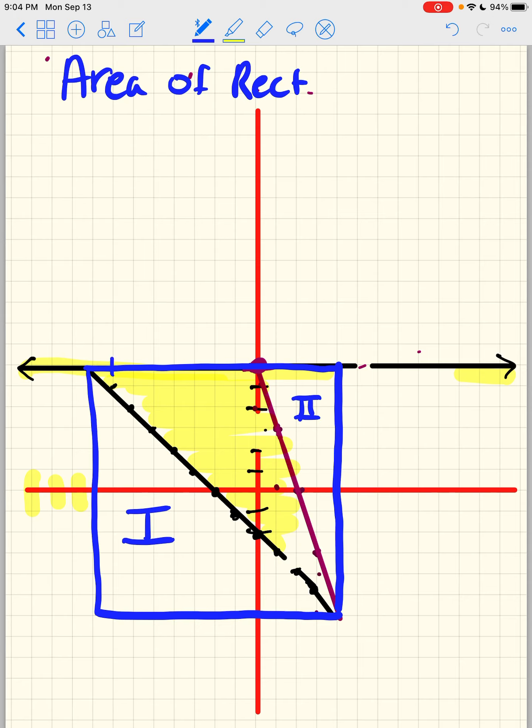So the area of the triangle is going to be 1, 2, 3, 4, 5, 6, 7, 8, 9, 10, 11, 12 units. 1, 2, 3, 4, 5, 6, 7, 8, 9, 10, 11, 12 units. Therefore, it's going to be 144 units squared.